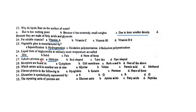Fibrous proteins and globular proteins are found in both the cytoplasm — intracellular receptors — and salivary and extracellular receptors. Both A and B is the correct option.